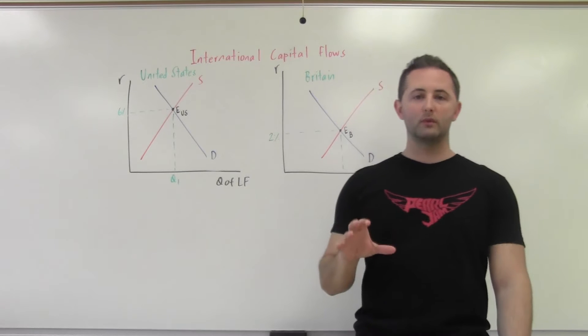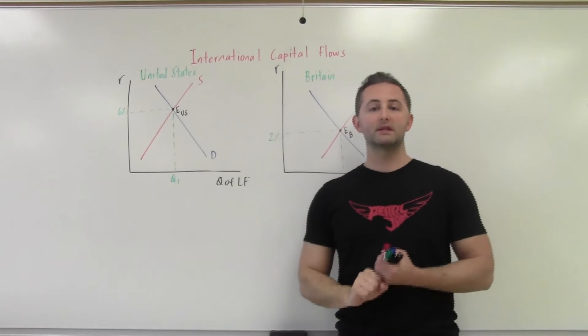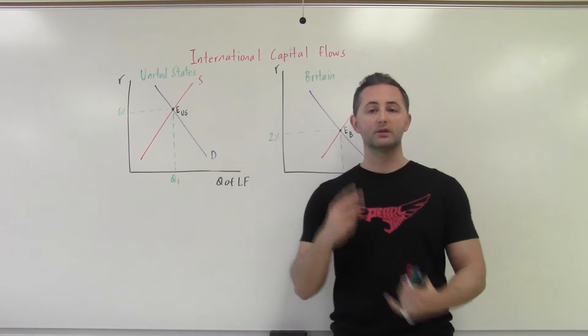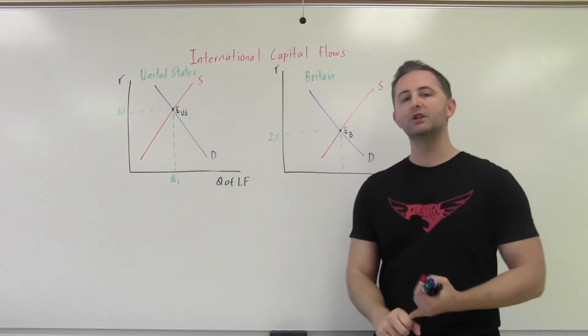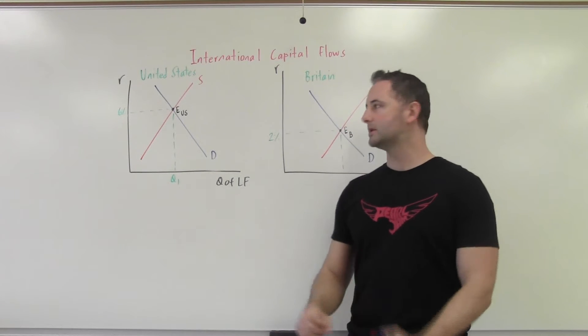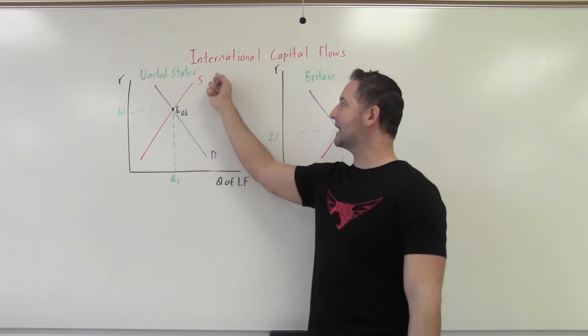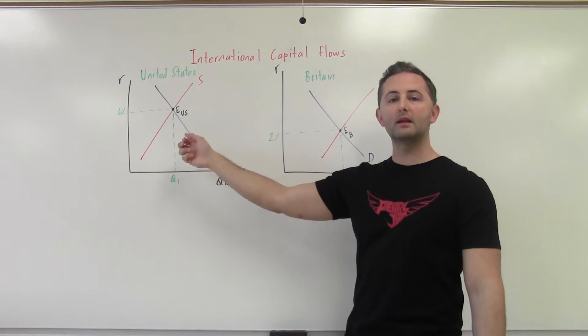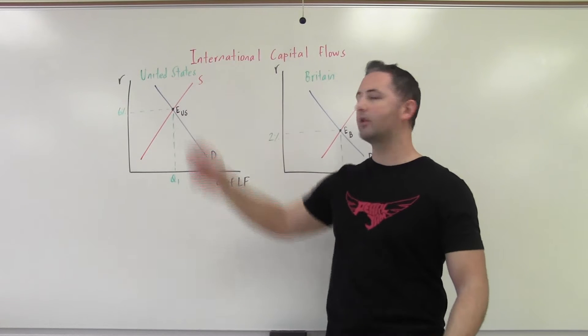If you recall from your loanable funds model, what shifts the supply curve? Supply of loanable funds, there's only two things. Changes in private savings behavior. If people are saving more money, supply of loanable funds shifts to the right. If they're saving less money, then it shifts to the left.